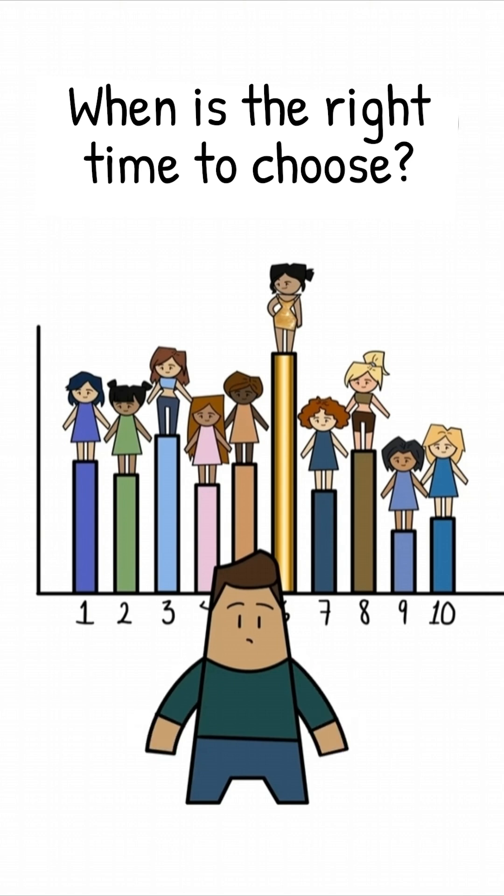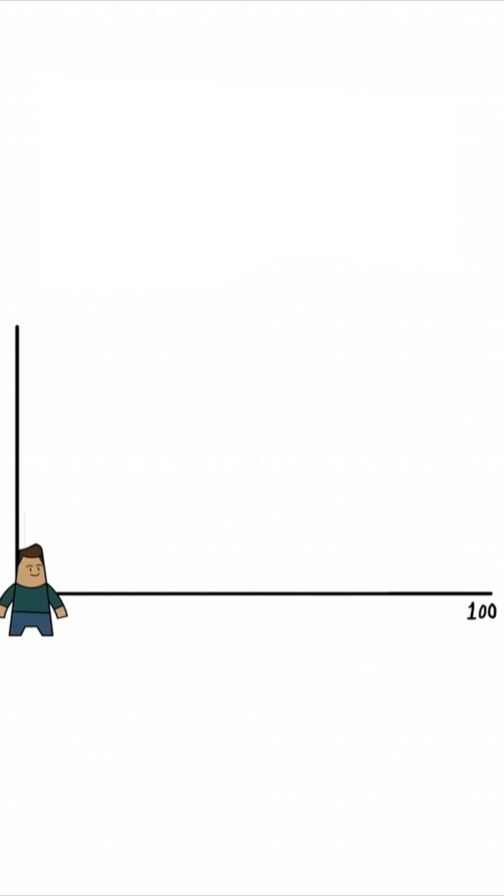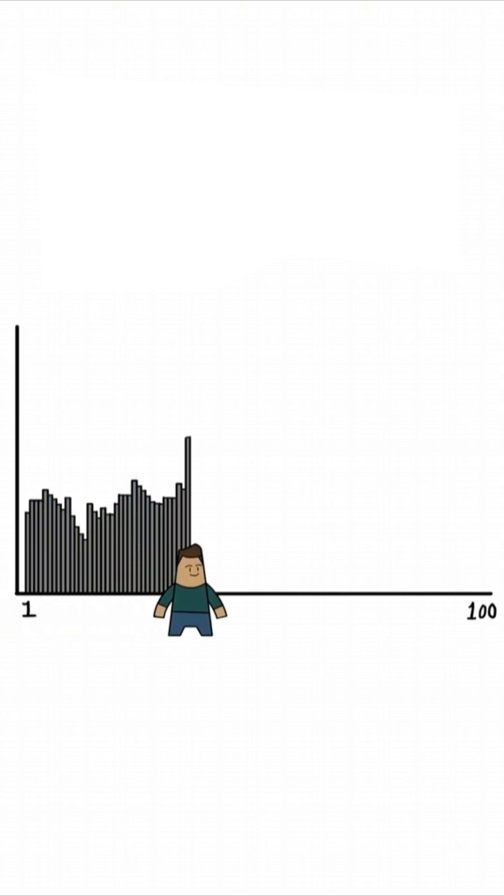The mathematically correct answer is to use the 37% rule. For example, if you could date 100 people, the strategy would be to go out with the first 37 and reject all of them.